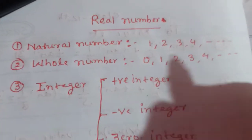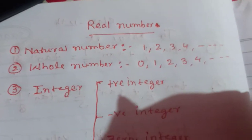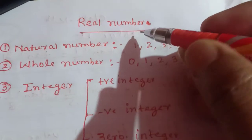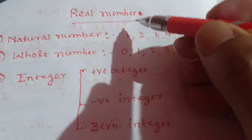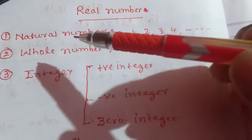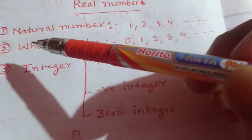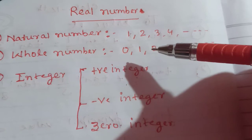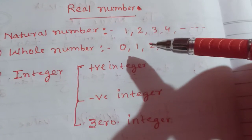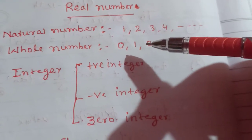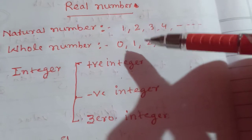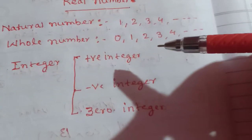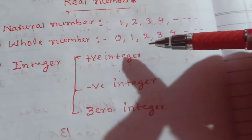Dear students, we have to start the first chapter of Class 10th: Real Numbers. In real numbers, we have to discuss some other number types. First is natural number — all counting numbers are called natural numbers, for example 1, 2, 3, 4, 5, and so on. Whole number: the natural numbers with zero are called whole numbers.